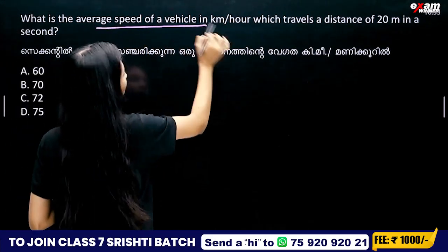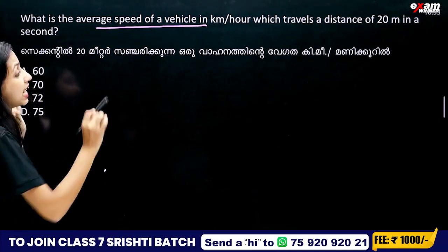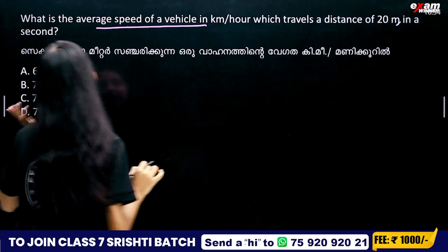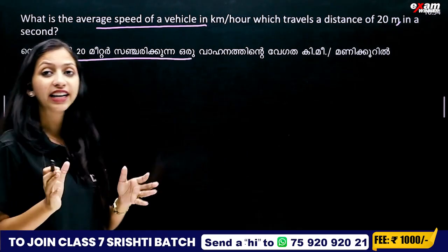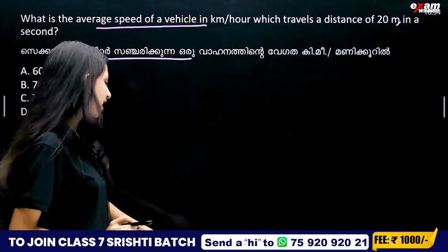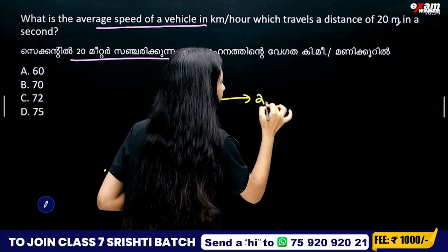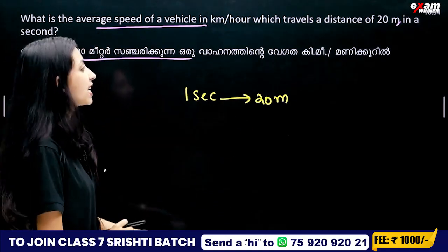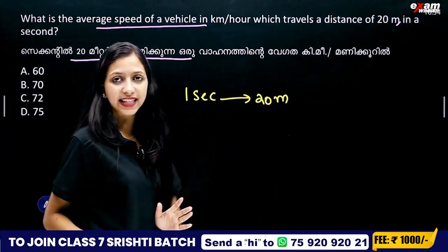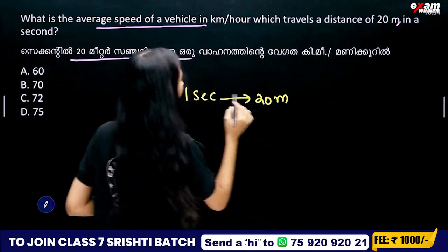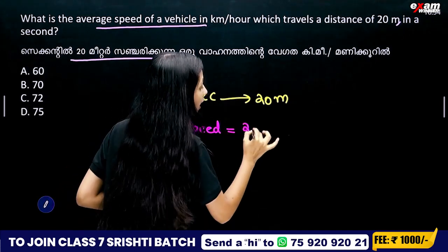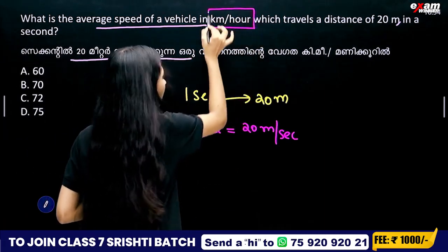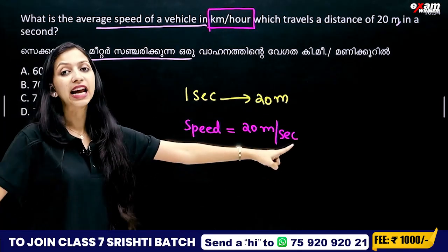Second question: What is the average speed of a vehicle in km per hour which travels a distance of 20 km in a certain time?